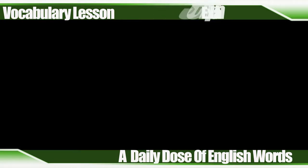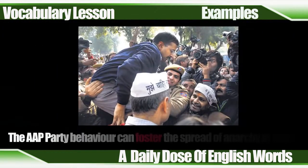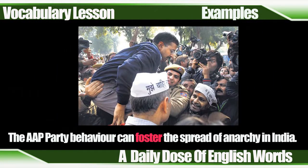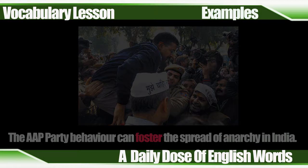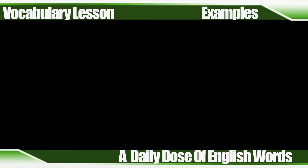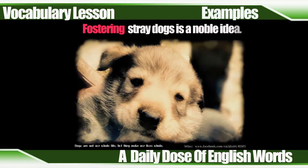For example, rowdy party behavior can foster the spread of anarchy in India. Second example: fostering stray dogs is a noble idea.